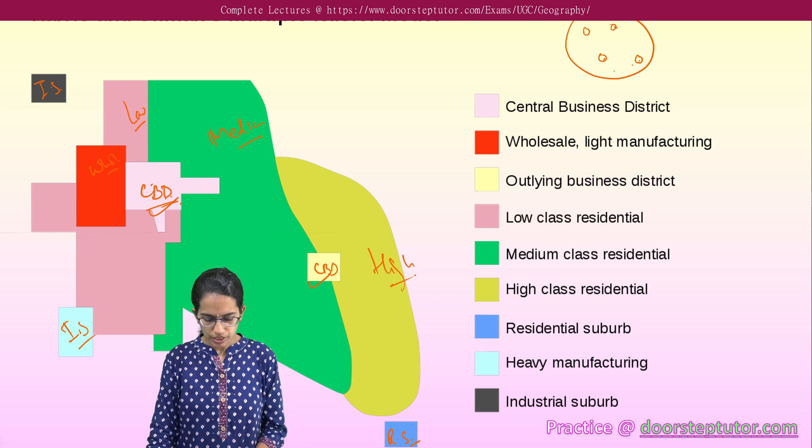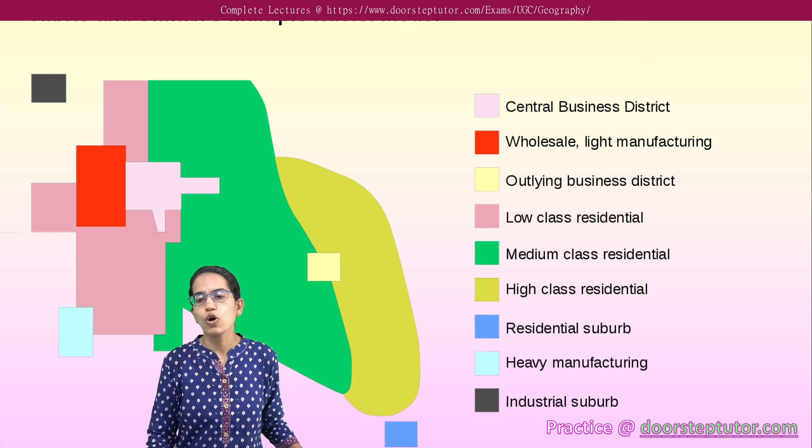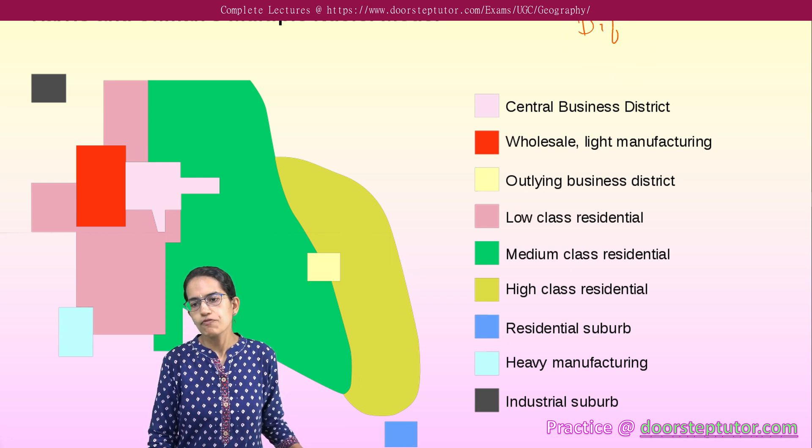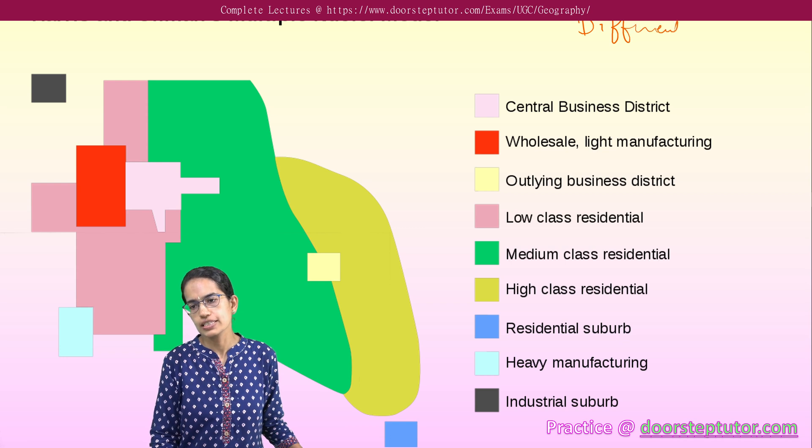This theory of Harrison-Ullman is based on four important aspects. The first is differential accessibility - how people can reach the CBD.